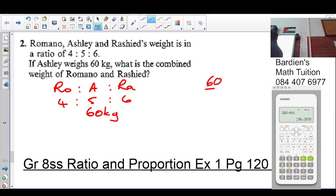What do we do? 60 divided by 5, which gives us 12 kilograms per unit, not so. So Romano's weight is 4 times 12. Rashid is 6 times 12. So this means to say Romano is 48 kilograms, and Rashid's weight is 72 kilograms.